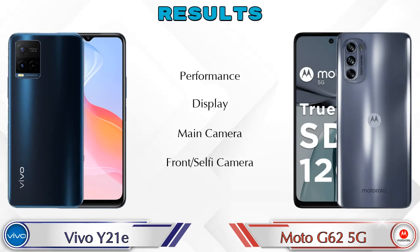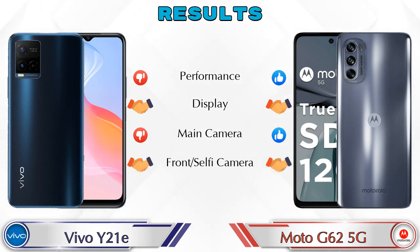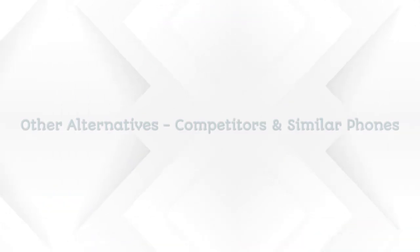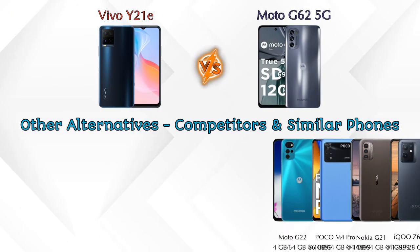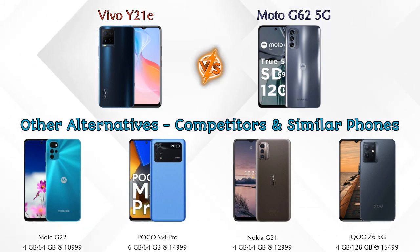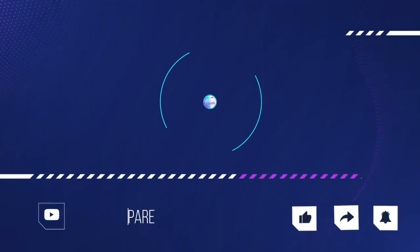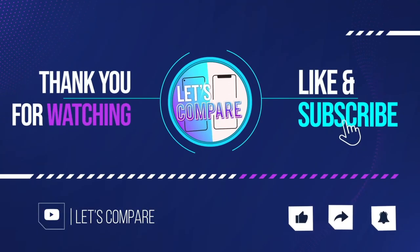Finally, talking about results: in performance, the Moto G62 5G is ahead. In display, both phones are the same. In the main camera, the Moto G62 5G is ahead. In the front selfie camera, both phones are the same. Other competitors at the same price include the Moto G22 4G, Poco M4 Pro, Nokia G21, and iQOO Z6 5G. Details about all competitor phones are available in the description. If you liked our video, please like and subscribe. Thanks for watching.